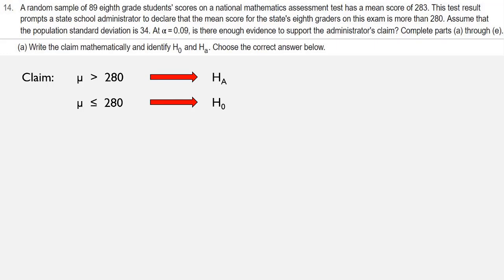When we're doing our tests, we always look at HA to determine what kind of test we're doing. Since HA has a greater than symbol, this is going to be a right-tailed test. That's Part A.